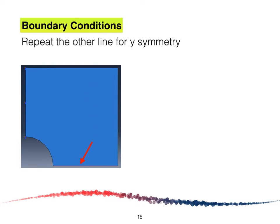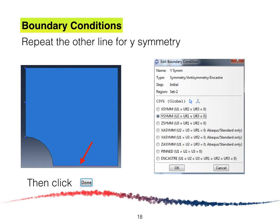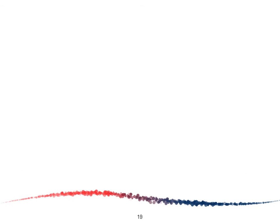Repeat for the other line. Select the horizontal line and click Done. Similarly, the Edit Boundary Condition window will appear. This time we select Y Symmetry because the horizontal line does not move vertically but it will move horizontally. Therefore we select Y Symmetry followed by OK.